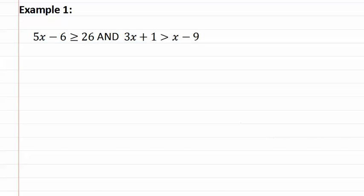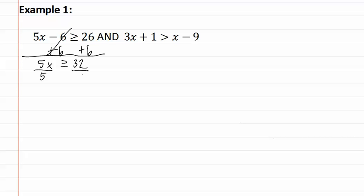In example one, let's start by solving the first inequality by adding six to both sides. This gives us 5x is greater than or equal to 32. Dividing both sides by five gives us x is greater than or equal to 32 fifths.